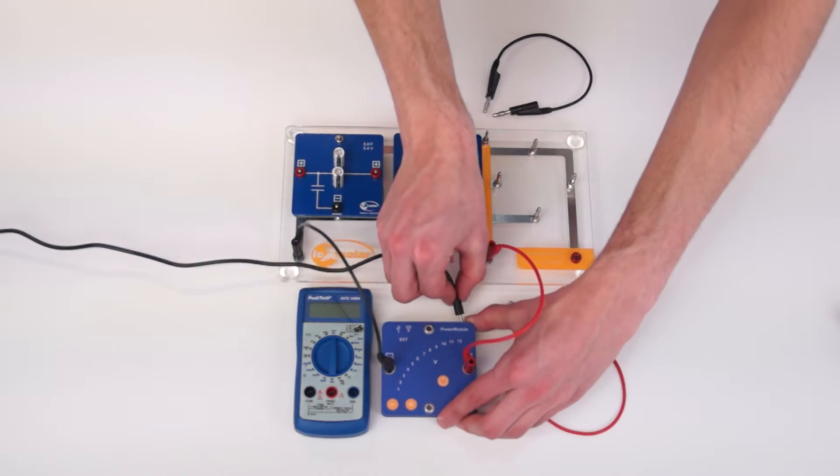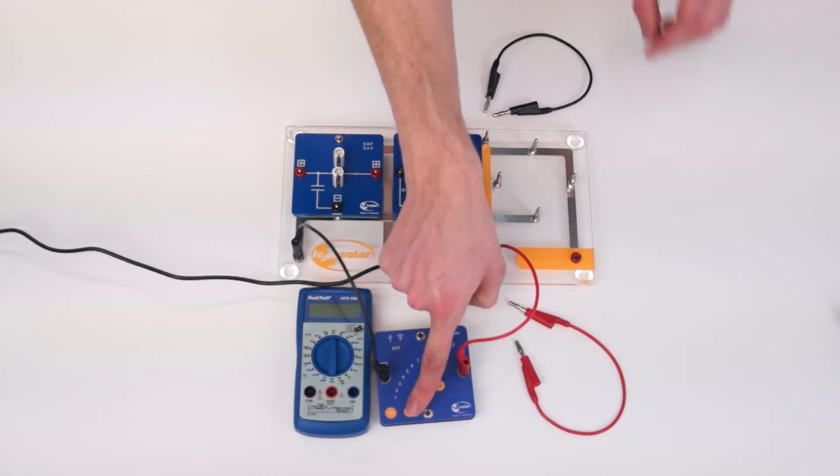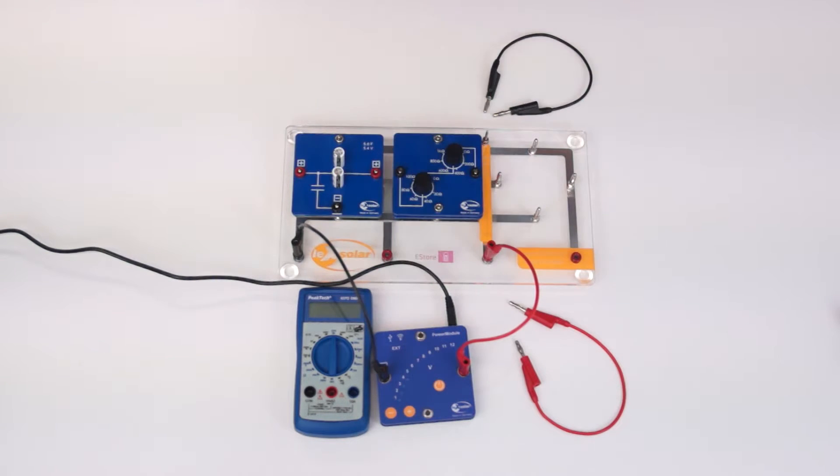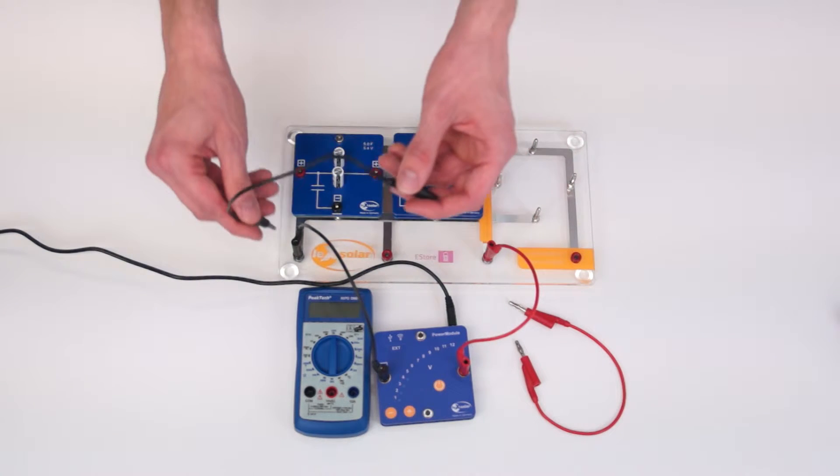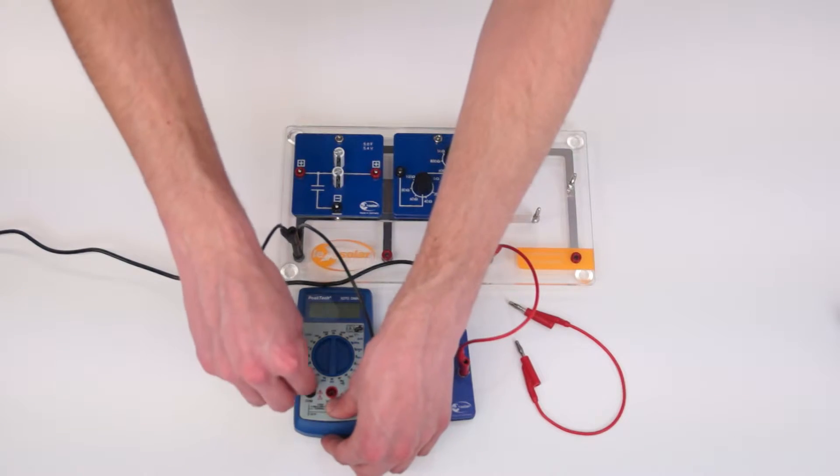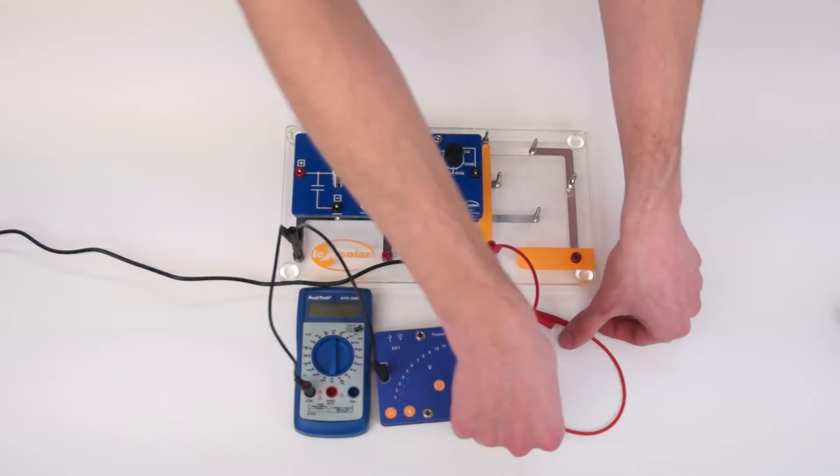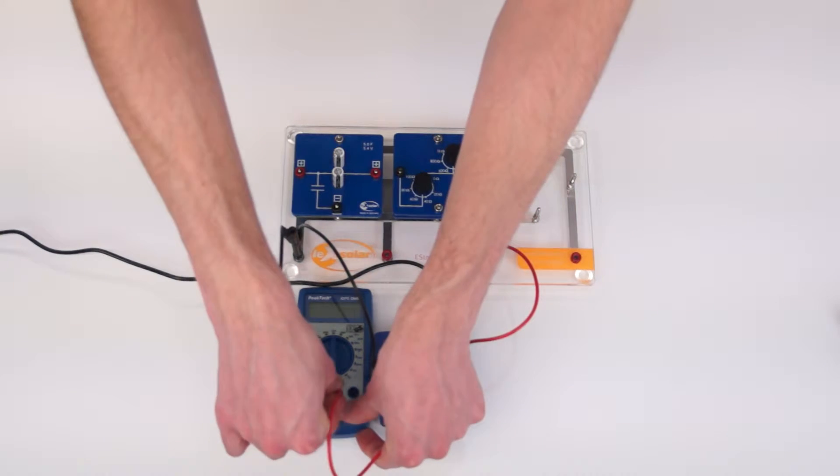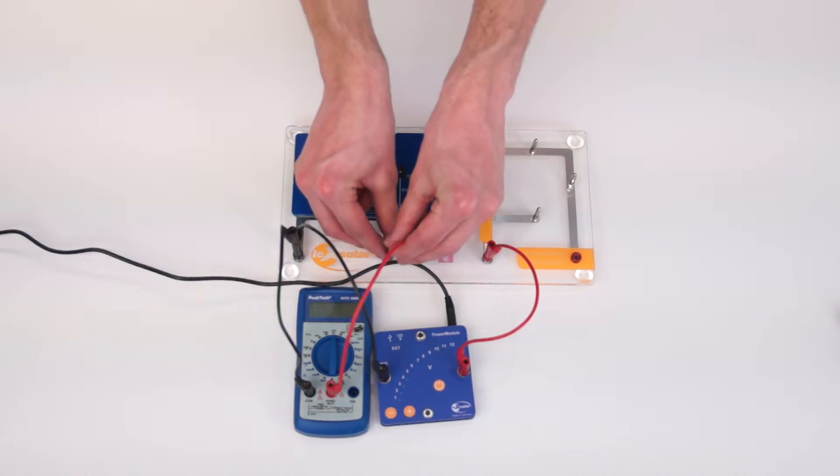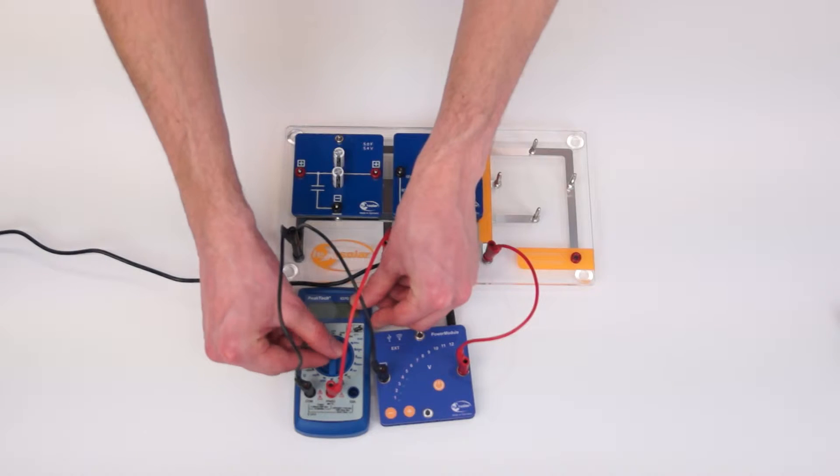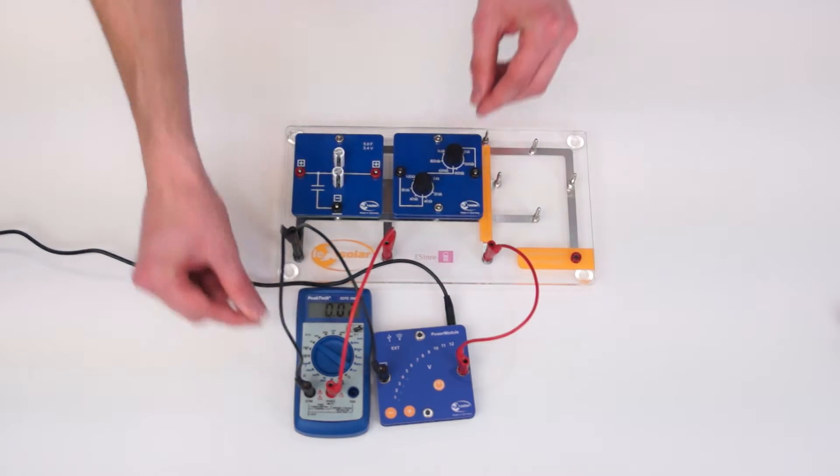Since we want to charge the capacitor to a voltage of 4 volts, we put 4 volts on the power module as well. To check the charge level, we connect the capacitor to the multimeter and turn it to the voltage measurement mode. To start charging, we turn on the power module.